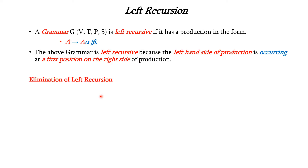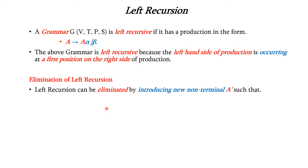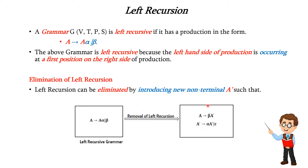We have to eliminate this left recursion for parsing. We can eliminate it by introducing a new non-terminal A' such that the left recursive grammar of the form A → A alpha | beta can be rewritten as two rules: A → beta A' and A' → alpha A' | epsilon. This is the generic form for removing left recursion and can be used for solving related problems.